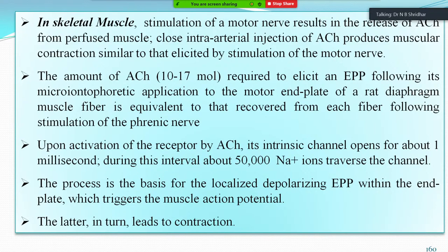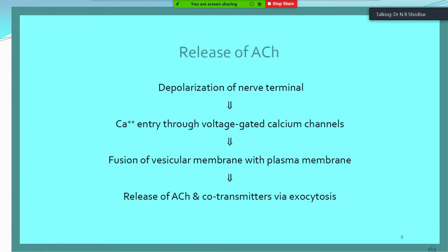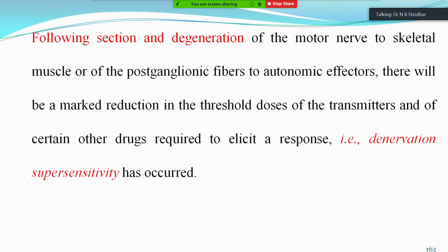Sodium comes inside and potassium is outside, ultimately causing contraction. Depolarization of the nerve terminal occurs via sodium and potassium currents. This causes nerve twitching by entry of calcium through voltage-gated calcium channels, then fusion of the vesicular membrane with the plasma membrane via the docking complex, and release of acetylcholine. Along with acetylcholine, ATP and other co-transmitters are extruded out via exocytosis.